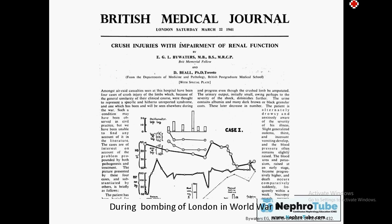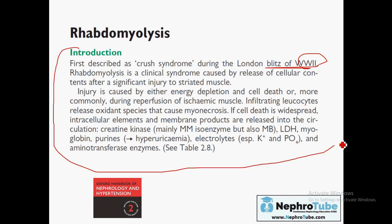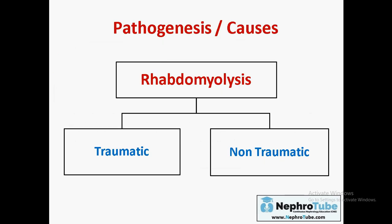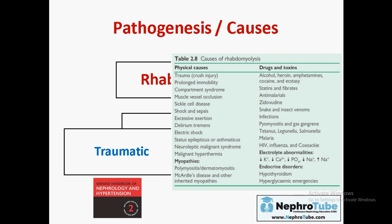Rhabdomyolysis was first discovered in World War II. I will arrange the introduction in a more strategic way. Rhabdomyolysis may be due to trauma of skeletal muscle, or it may be due to non-traumatic factors. Starting with traumatic causes, many causes were mentioned in the Oxford Handbook, and whatever the cause of trauma to skeletal muscle, the presentation will be the same.